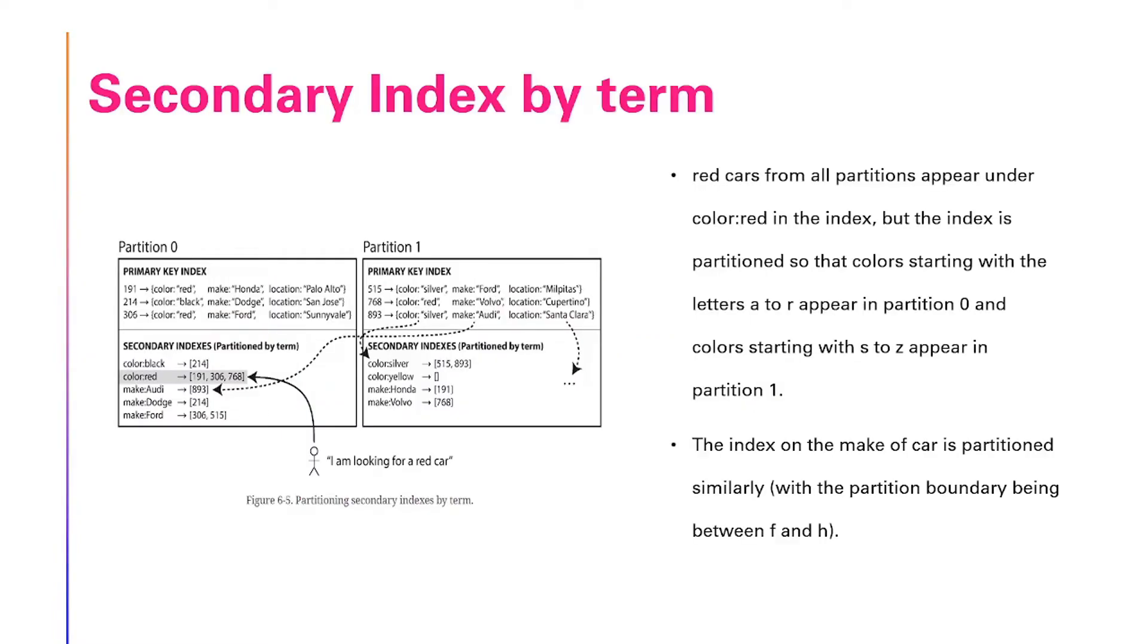Here, the red cars from all the partitions appear under color red in the index, where the index is partitioned so that the colors starting with the letters A to R appear in partition 0, and colors starting with S to Z is appearing in partition 1. The index on the make of the car is partitioned similarly to the partition boundary being between F and H.